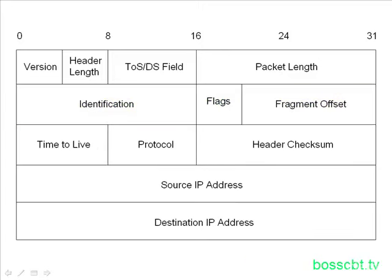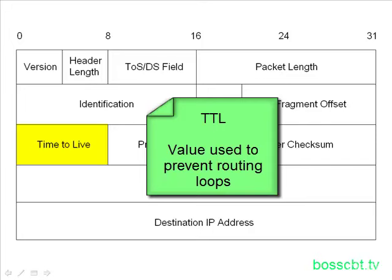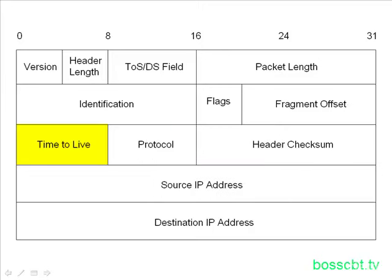The next field is very relevant to our studies: the time to live, or TTL. That's a value used to prevent routing loops in a network. We'll jump into the details in another tutorial, but the TTL field saves networks from getting congested with packets that never stop routing.